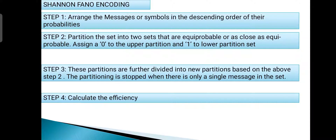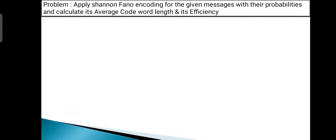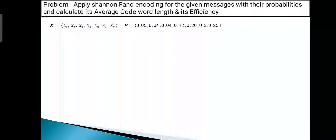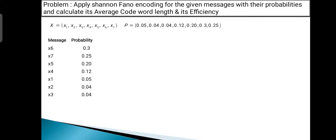With an example, we will see how to apply Shannon-Fano encoding. The problem is: apply Shannon-Fano encoding for the given messages with their probabilities and calculate the average codeword length and efficiency. The messages are from X1 to X7 with the given probabilities. The first step states to arrange these messages in decreasing order of their probabilities. Message X6 has the maximum probability of 0.3, followed by X7 with 0.25.